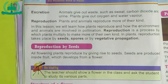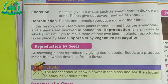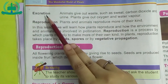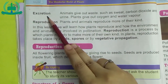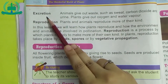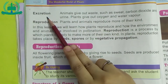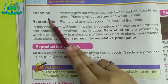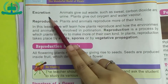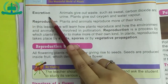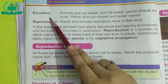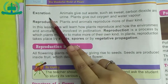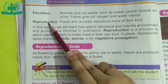Now see page number two. The next heading is Excretion. What is excretion? All living things have an excretion process in which they remove waste materials from their body. In plants, they give out oxygen and water vapor.